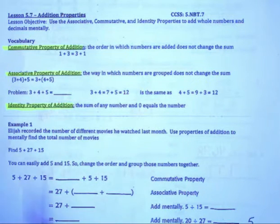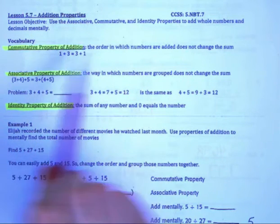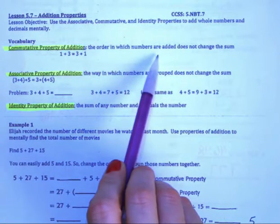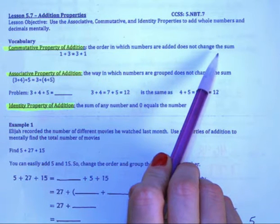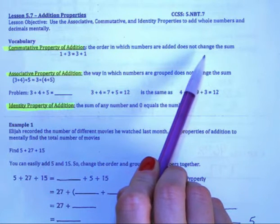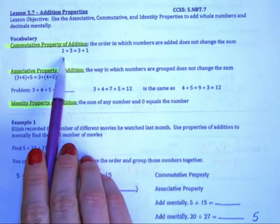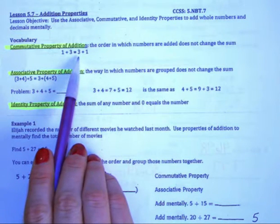The first one is the commutative property of addition, and this one states that the order in which numbers are added does not change the sum. That means that you can rearrange numbers any way that you want to, and it will not change your final answer. You'll still get the right answer. For example, instead of doing 1 plus 3, you could rearrange it to 3 plus 1.